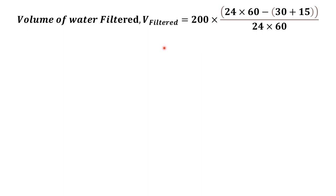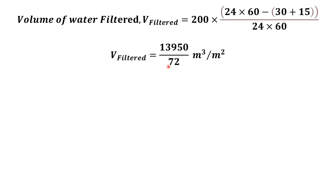Volume of water filtered: rate of filtration is 200 m³/day/m². The analysis is done for one day, which is 24 × 60 = 1440 minutes. Out of this, 15 minutes are taken for backwashing and 30 minutes for maturation — a total of 45 minutes. So the duration of filtration is 1440 − 45 = 1395 minutes. Converting to days and multiplying: volume of filtered water = 200 × (1395/1440) = 13,950/72 m³/m².